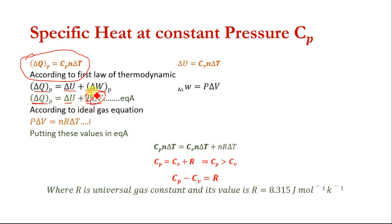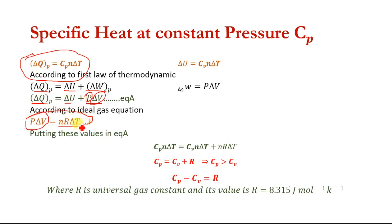The work done here is P del V. According to the ideal gas equation, P del V is equal to N R del T, where R is the universal gas constant, N is the number of moles, and del T is the change in temperature. From the ideal gas equation we have P del V equal to N R del T.